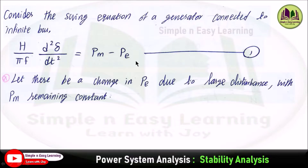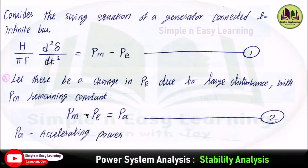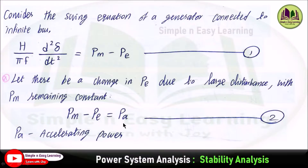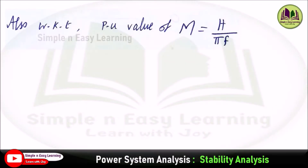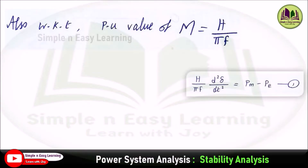Let there be a change in the electrical power Pe due to a large disturbance, but the mechanical power Pm remaining constant. The expression Pm − Pe equals the accelerating power. Since the electrical power is changing but the mechanical power remains constant, Pm − Pe will be a positive value. So Pm − Pe equals the accelerating power Pa — consider this as the second equation.